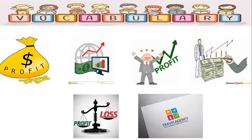Same here — look at these pictures all together and deduce the vocabulary word. You have profit, you have money, profit like an arrow going up. So what does profit mean — is it gaining money or losing money? You have a travel agency. How is that related to traveling? And what does that arrow going up infer?